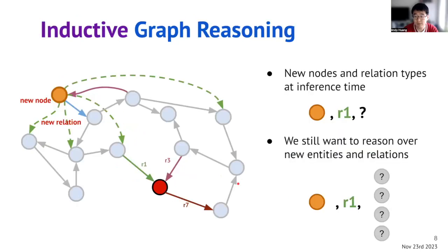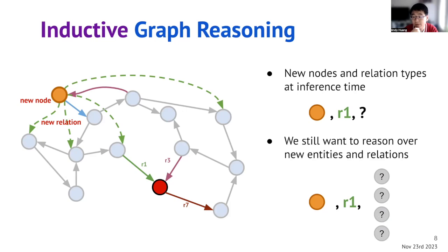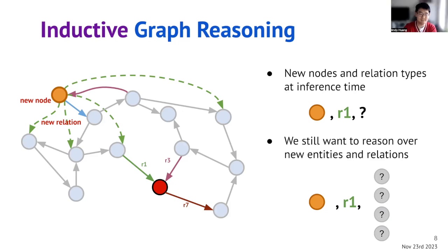Quick clarification on inductive reasoning: when we say an inductive node, it means it's not observed before, but you do have some structural information about it — specifically its connections to other nodes, including edge types and connectivity patterns. We don't have any node features here. If you have a new node with only node features but no connections to other nodes, that would require features for sure. We need connectivity information.